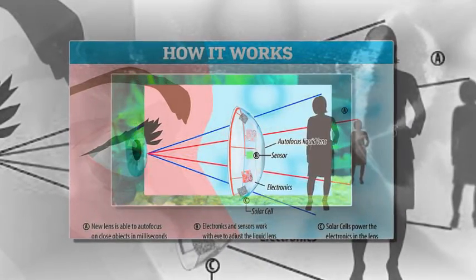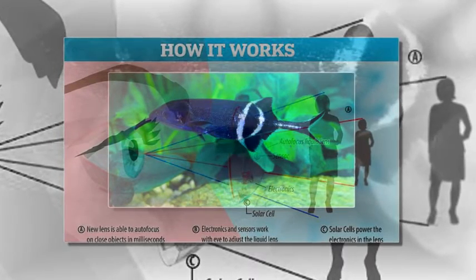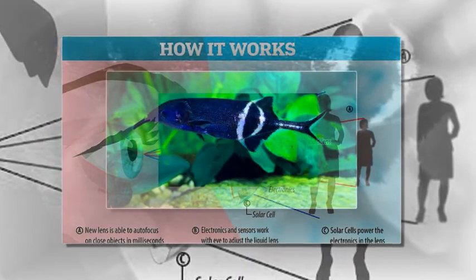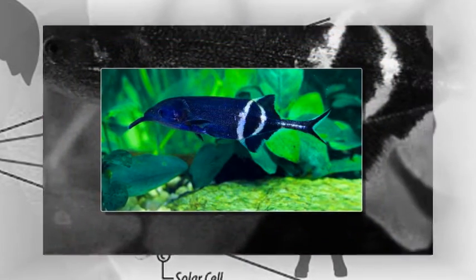Presbyopia is the stiffening of the eye's lens that makes it difficult to focus on close objects. It affects more than one billion people worldwide, half of whom do not have adequate correction, according to Dr. Jiang.